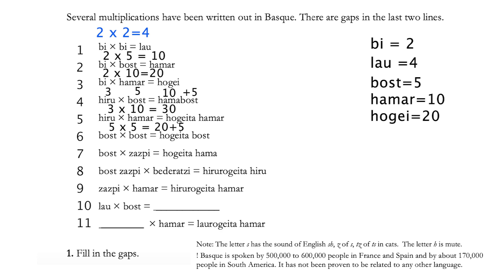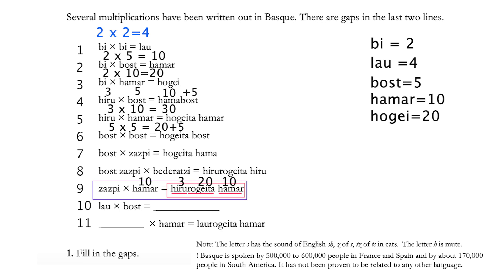In equation 6 we can see 5 times 5 equals 25, using the same logic of addition for the result. At this point we should identify that 'ta' has no meaning but only serves as a combination tool to tell you there's a number after it. So we can skip equations 7 and 8 for now and jump to equation 9. In equation 9 we have an unknown 'b'. We know that something times 10 equals 'hiru hogei ta hamar'. We have three different numbers here in a combination: 3, 20, and 10. Remember to check the footnote — the letter 'h' is mute, which explains why it is 'rogei' not 'hogei'.